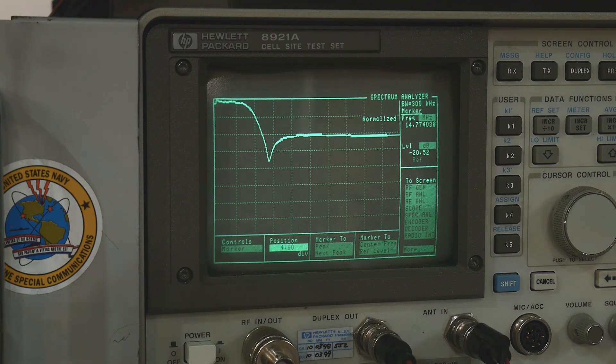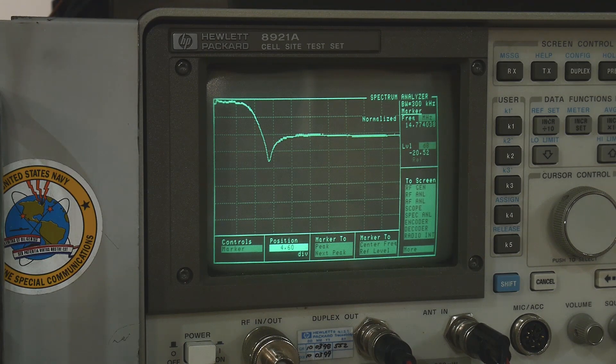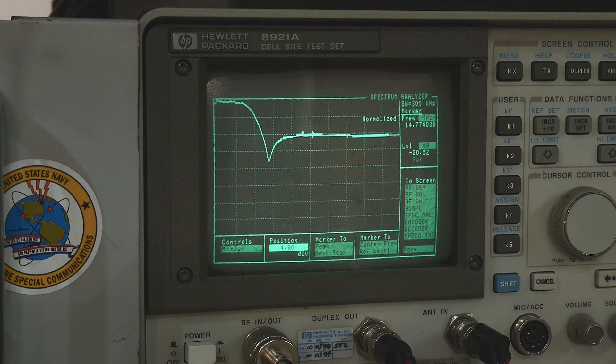So this is the filter as built. And like I said, there's that dip and we're at minus 20 dB down over here.